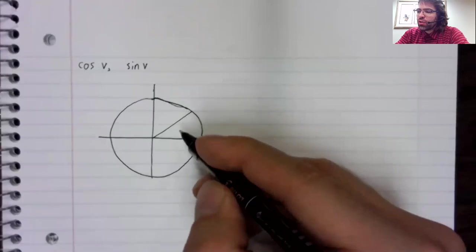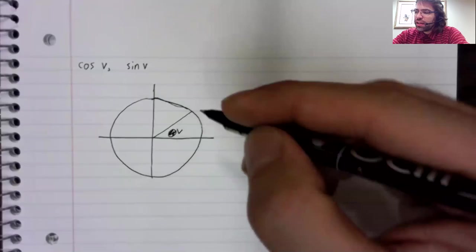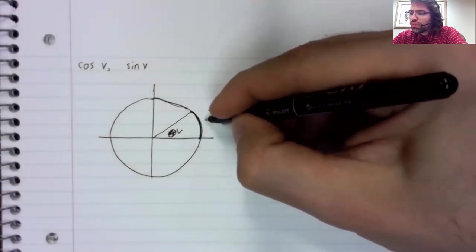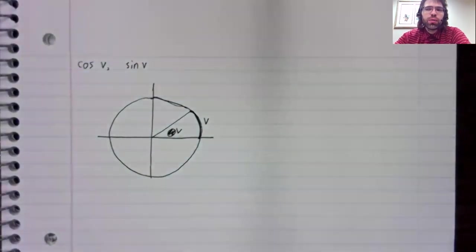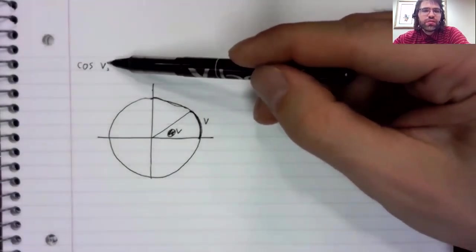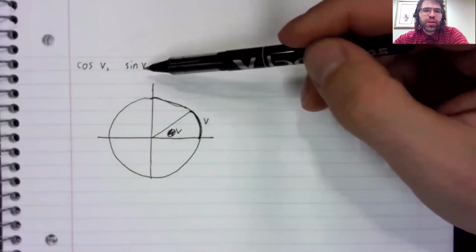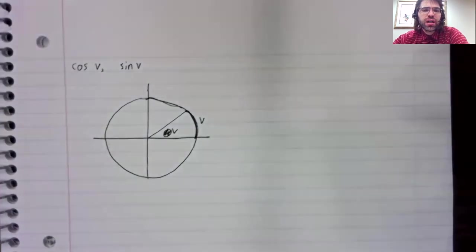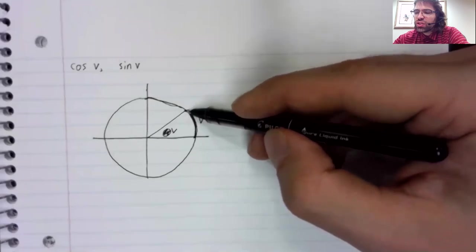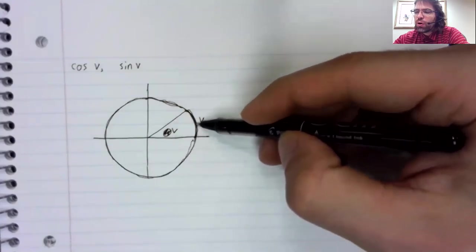And if our angle is being measured in radians, we can also think of our angle as a distance. V can be any number, and the cosine of v and the sine of v are both defined. Because v is just a distance, it tells us how far we walk.